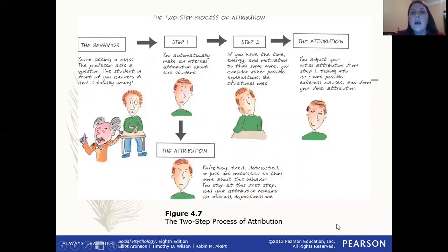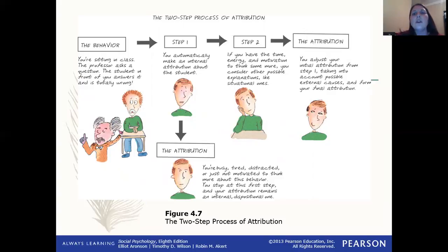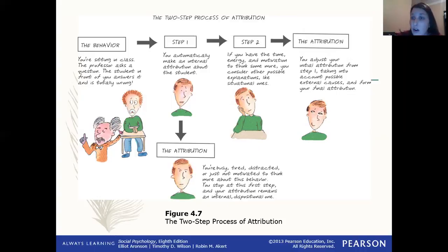The next slide is a cartoon illustrating step one versus step two. The behavior shown is: you're sitting in class and a professor asks a question, and a particular student gets the answer wrong. If you engage in the first step, you may automatically assume an internal attribution — that person's dumb, or they're not paying attention, or they're a bad student. If you're tired, distracted, or just don't care, you may end at that first internal attribution and stop there.